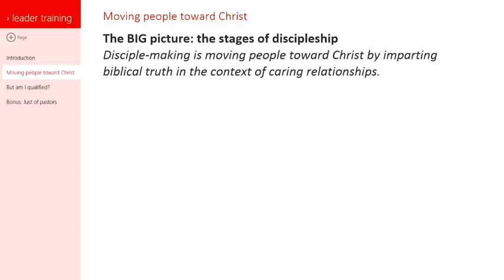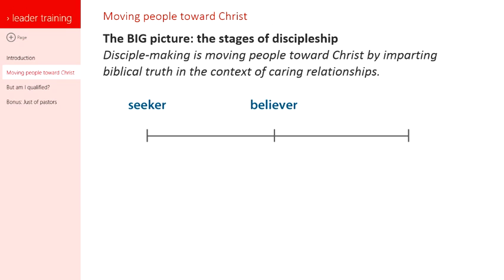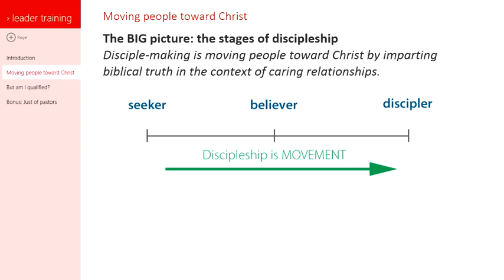Let's use a little continuum here. There are three basic types of people we're going to talk about: there's the seeker — the person who doesn't know Jesus; there's the believer — the person who does know Jesus; and then there's the discipler. The goal is movement. The goal is to move people from the left side of this picture to the right side, because discipleship is movement.